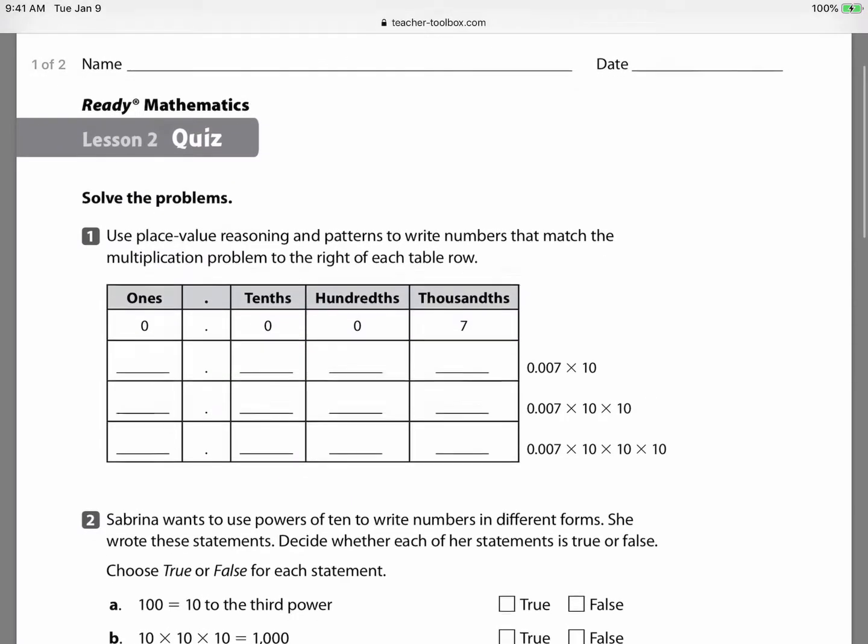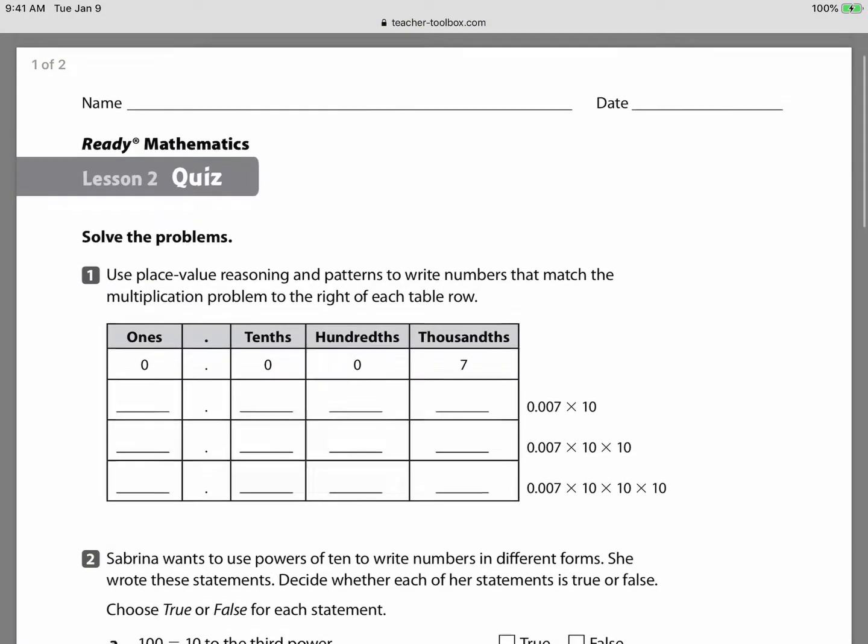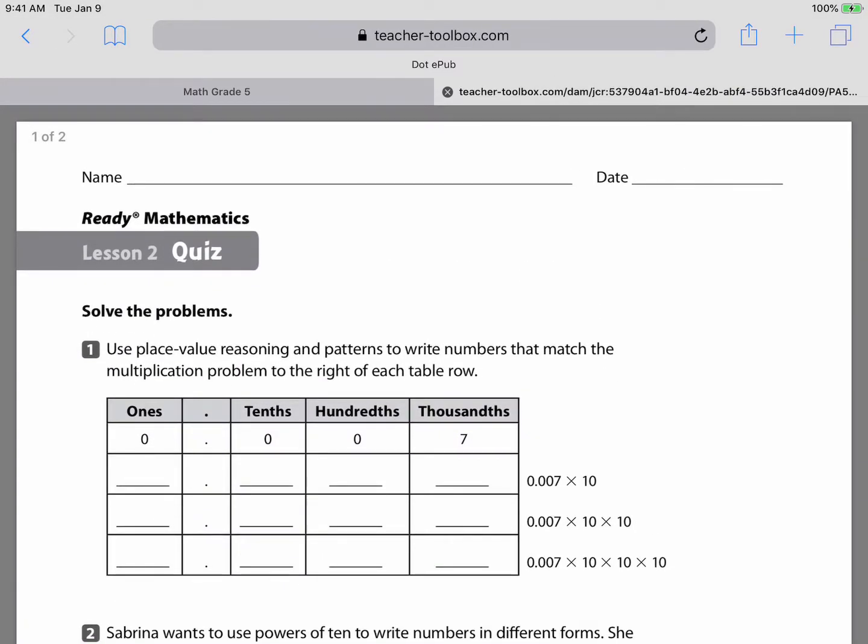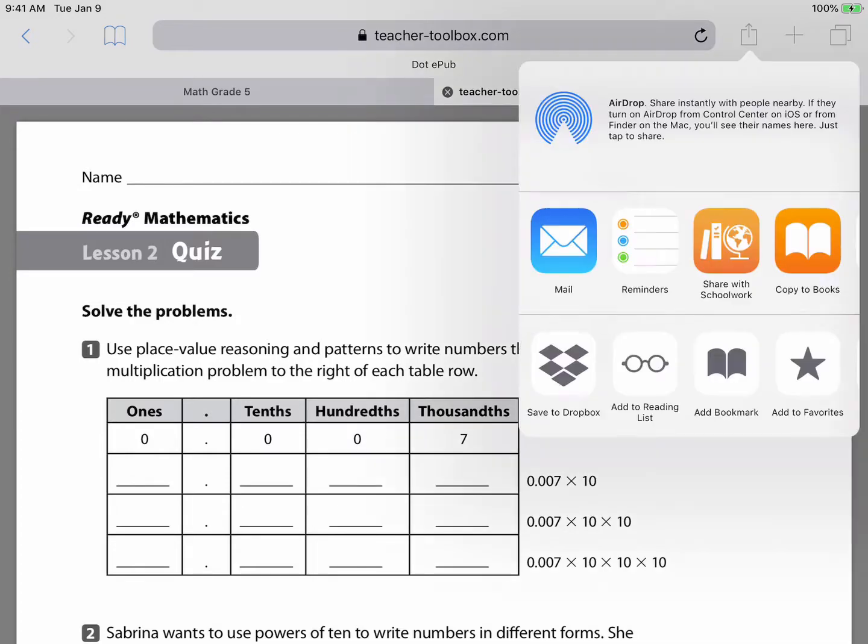At this point it's really just a PDF that is on the website and we really can't annotate over top of it. However, if we tap the little square with an arrow pointing up and go into our options, you're going to see if you scroll over a create PDF.